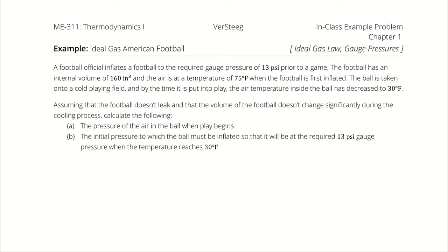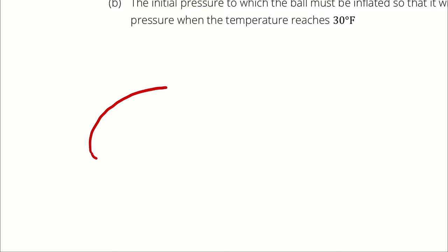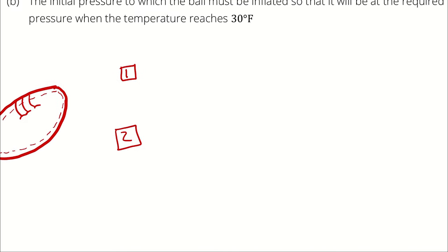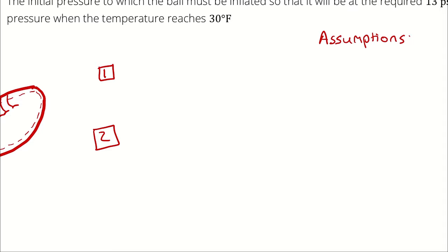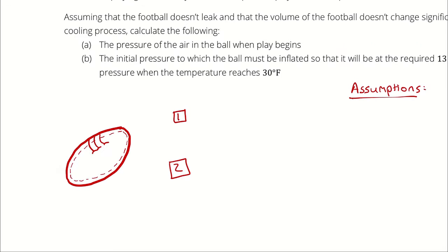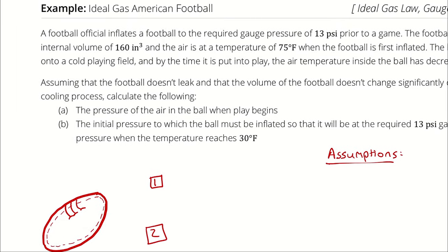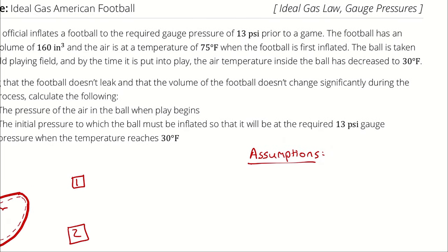I will begin by parsing the problem statement into given properties and listing my assumptions. Ignoring part B for a moment, we are considering a cooling process. The football is initially at 13 PSI and 75 degrees Fahrenheit, and is cooled to 30 degrees Fahrenheit.